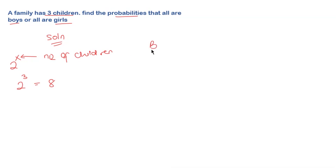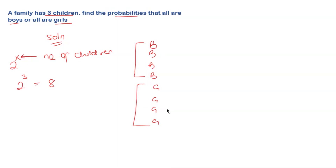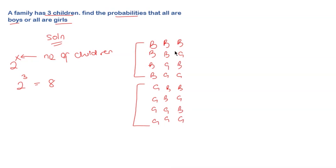In a family of three, we list all combinations using boys and girls. You write down boy in four places, then girl in four places — that makes eight. Then you reduce by a factor of two each time: boys by two, girls by two, then boys by one, girl by one. We end up with 8 combinations total for three children.